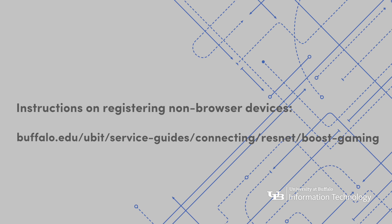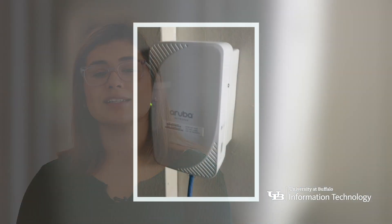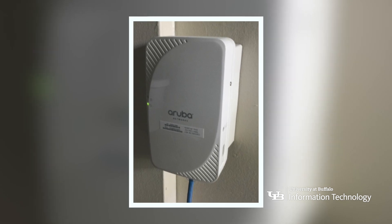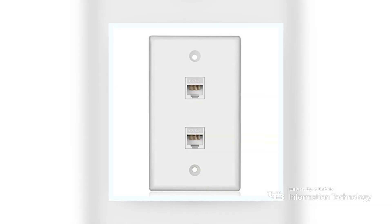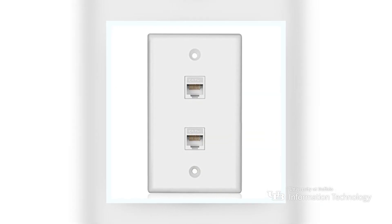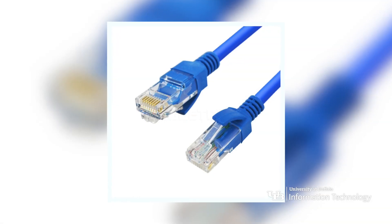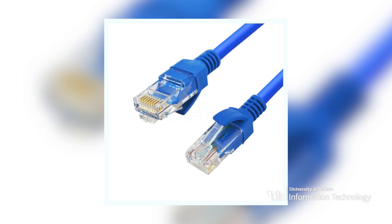To get started, use an Ethernet cable to connect your device directly into the Aruba box or the Ethernet jack in the wall of your room. Make sure your Ethernet cable is Cat5 or higher.